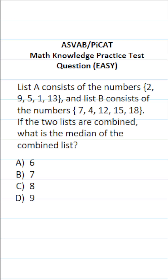This math knowledge practice test question for the ASVAB and PyCat says: List A consists of the numbers 2, 9, 5, 1, 13, and List B consists of the numbers 7, 4, 12, 15, 18. If the two lists are combined, what is the median of the combined list?